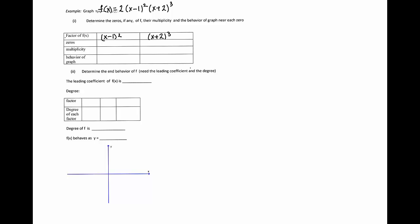The x minus 1 factor produces zero at 1. The power of x minus 1 is 2, so the multiplicity is 2. We know that if the zero has multiplicity 2, then the graph will touch the x-axis.